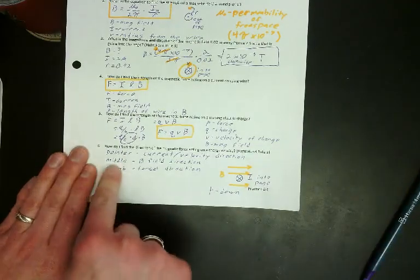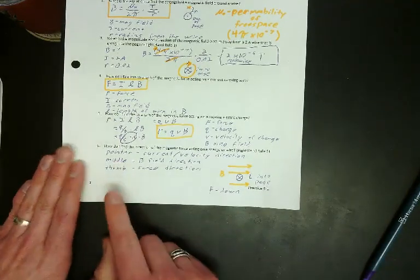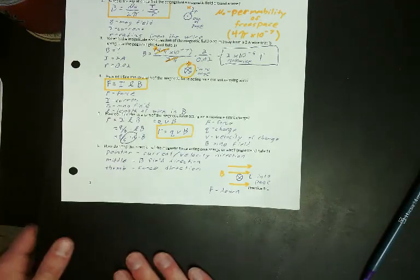And my thumb is the direction of the force and it's down. So F would be down. No, it's not too bad. If you remember what these things are, it's not too bad. Okay? Yes? Who came up with these rules?